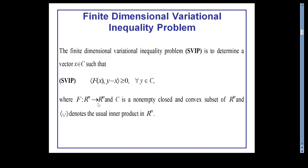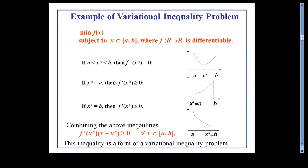In other words, we need to find a vector x in C such that the vector F(x) makes an acute angle with all the vectors emanating from x. The simplest example of a variational inequality problem is the optimization problem: minimize f(x) subject to x belonging to [a, b], where f is a differentiable function from R to R.